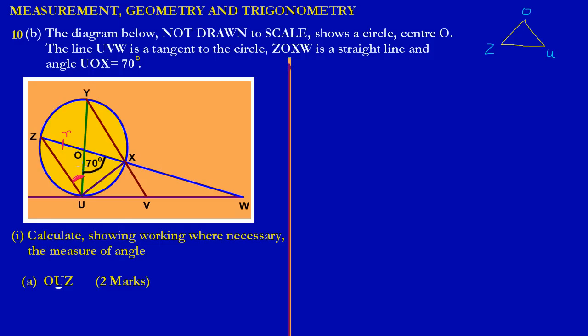From O to U is another radius, so we have two radii. In any triangle, whenever you have two sides that are of the same length, this is called an isosceles triangle. In an isosceles triangle, the base angles are equal. That was just a preview of how we're going about finding angle OUZ.